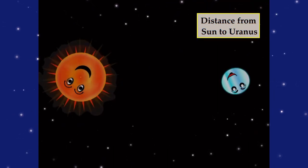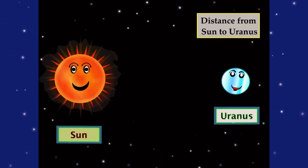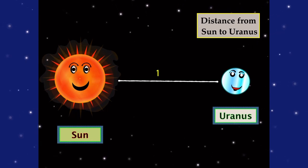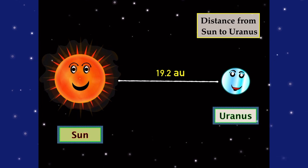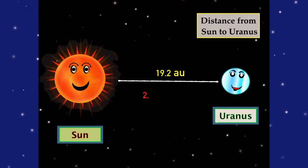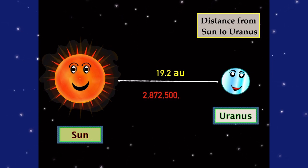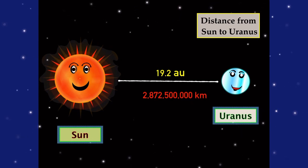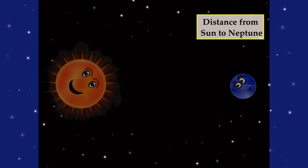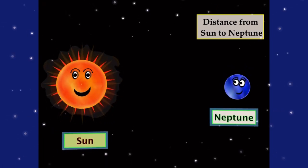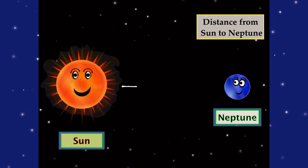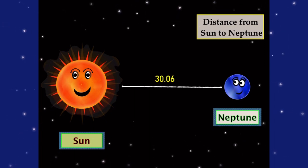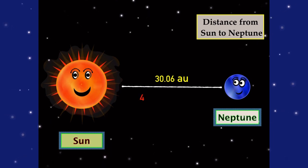Now we got the Sun to Uranus, also known as the coolest planet, and it's 19.2 AU. And now we got the Sun to Neptune — Neptune is known as the farthest planet from the Sun, and it's 30.06 AU.